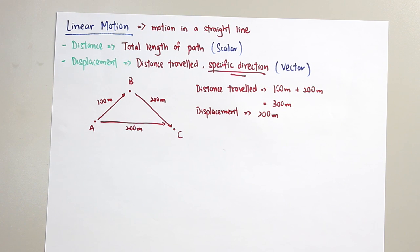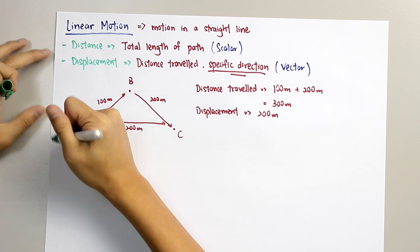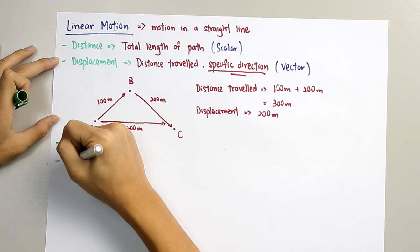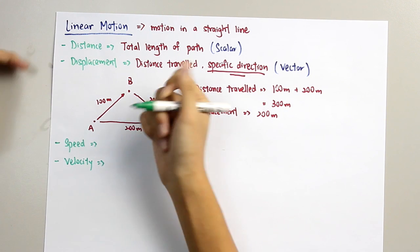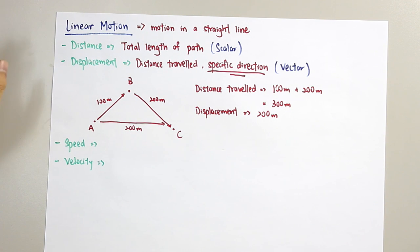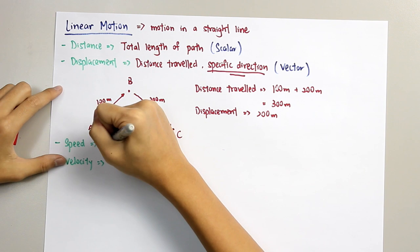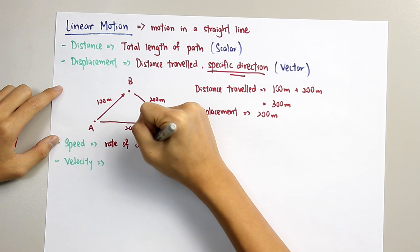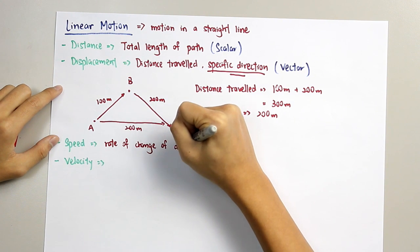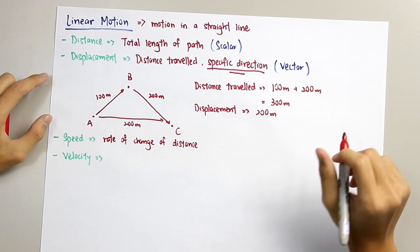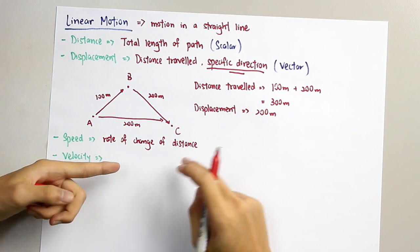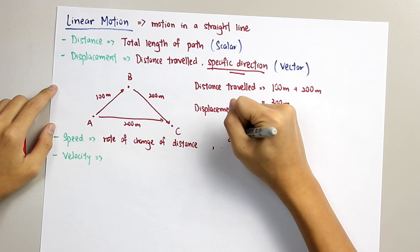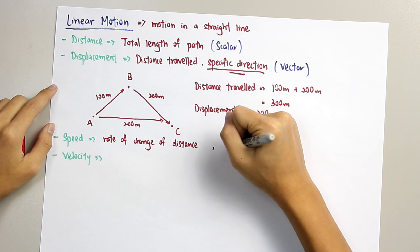Next, speed and velocity. Speed is the rate of change of distance. And since we said that it's a rate of change of distance, the formula for speed is the distance over time.